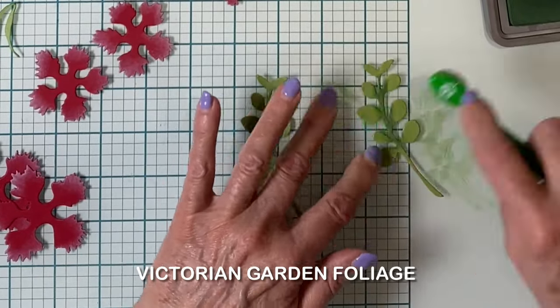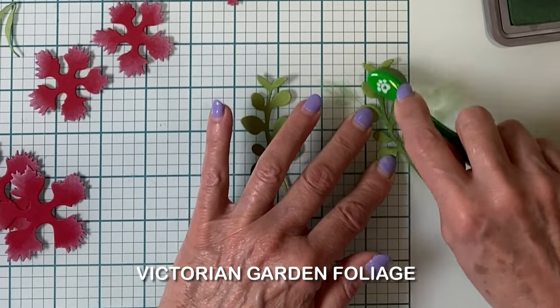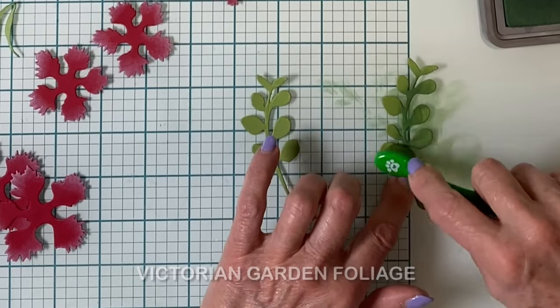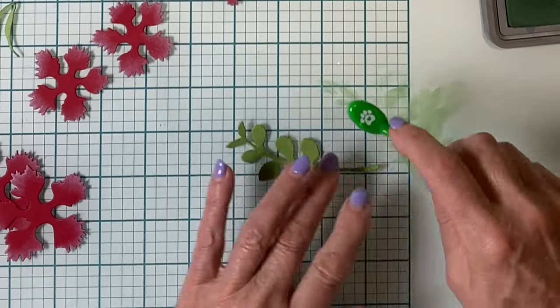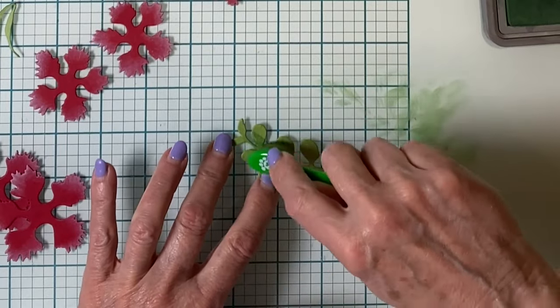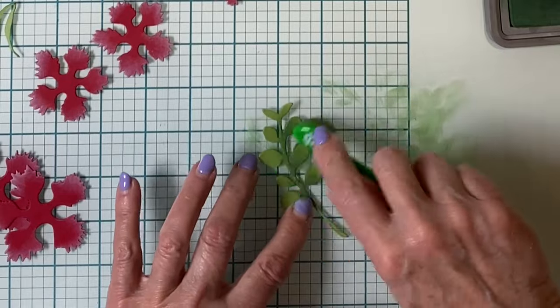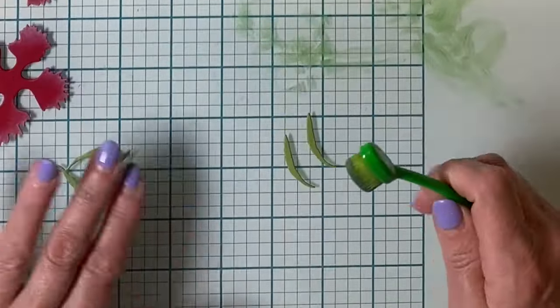The floral arrangement will also incorporate three leafy sprigs from the Victorian Garden foliage die set. These sprigs and the carnation's leaves were cut from green cardstock. Depth was added to both sets of die cuts with Distress Oxide ink, Rustic Wilderness.